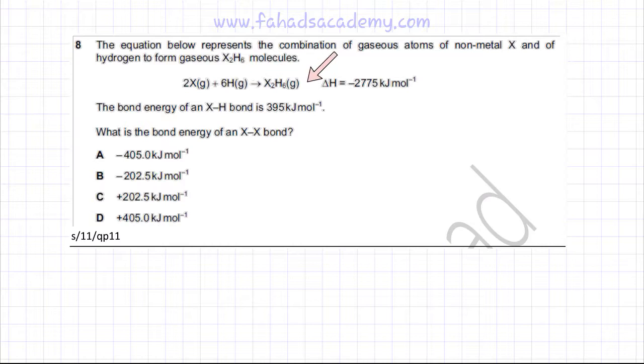So there is a reaction given and the bond energy of an X-H bond is provided. It is 395 kJ per mole and he is asking what is the bond energy of an X-X bond.